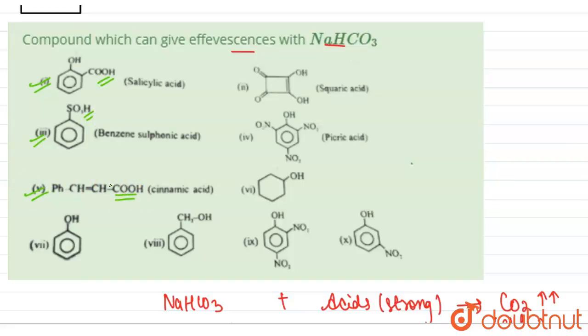So now we have three groups. Now we know that strong acids also give CO₂ with weak base sodium bicarbonate. So squaric acid is a strong acid. If we talk about it, it will give CO₂, that means effervescence. If we talk about picric acid, it has 3NO₂ groups which are electron withdrawing groups that increase acidic strength.